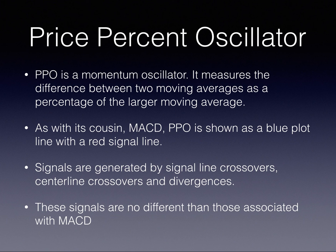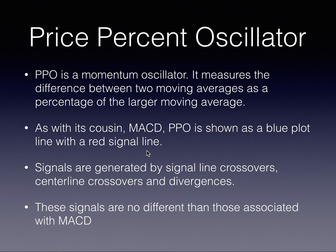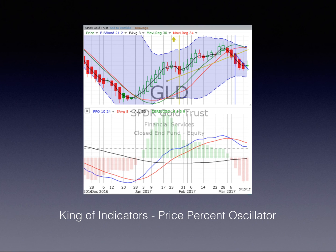Let's talk about what the price percent oscillator is. It is a momentum oscillator, and what it does is it measures the difference between two moving averages, just like the MACD does. In fact, the PPO is just like the MACD. We use the same blue plot line and a red signal line.